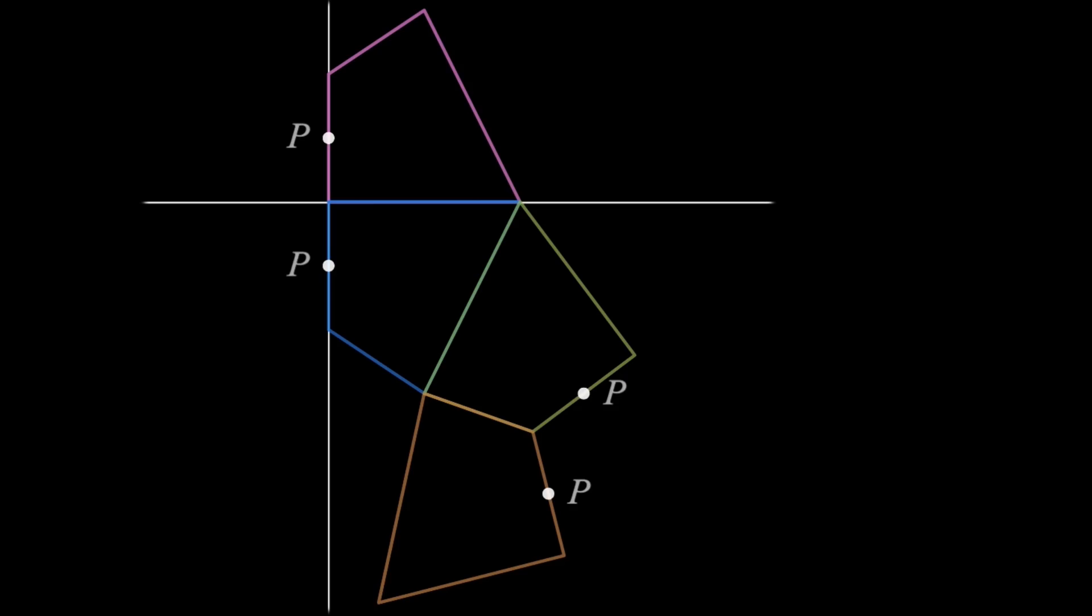Now the goal is to find the shortest path from P to itself around all four sides. Which means we just have to find the shortest path from this P to this one, which is obviously again a straight line.